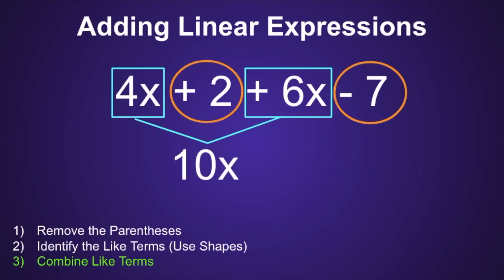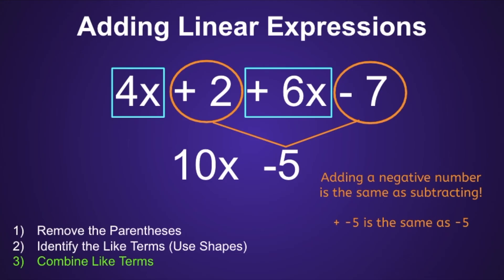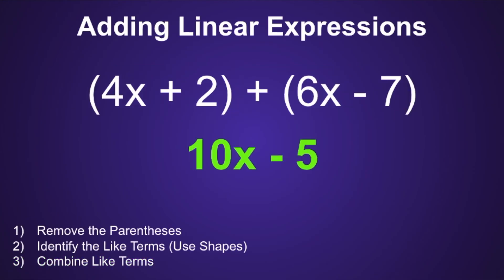The second pair of like terms is positive 2 and negative 7, and 2 minus 7 is equal to negative 5. Since we have a negative 5, we do not have to add the plus sign, because adding a negative number is the same as subtracting. For example, adding a negative 5 is the same as just subtracting 5. So for this one, I can turn that negative sign into a subtraction sign. So the final expression would be 10x minus 5.